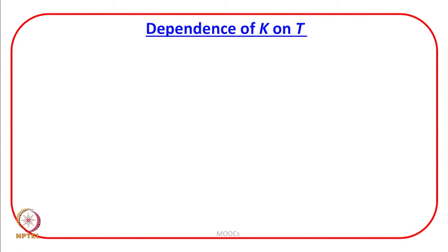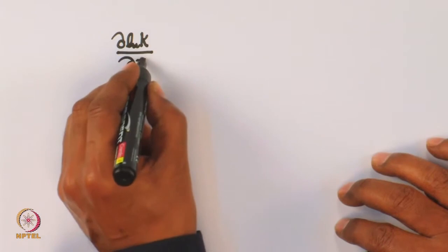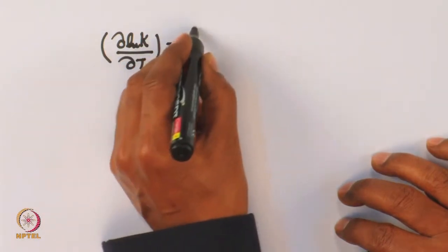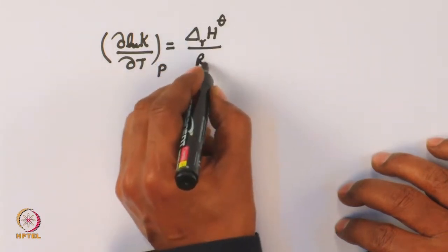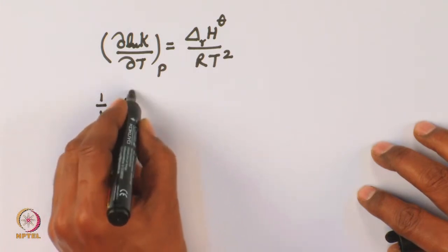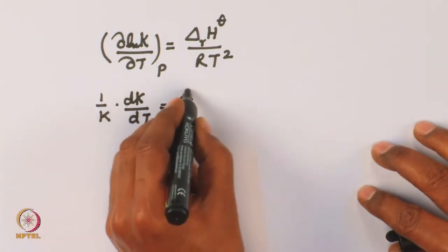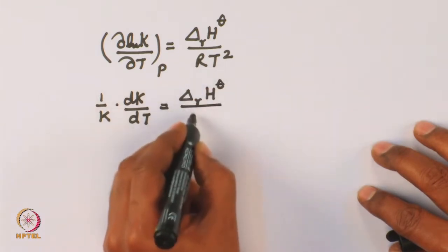Let us continue our discussion on the temperature dependence of the equilibrium constant. According to the Van't Hoff equation, d(ln K)/dT at constant pressure equals ΔrH°/RT². I can also write this as (1/K)(dK/dT) at constant pressure equals ΔrH°/RT².